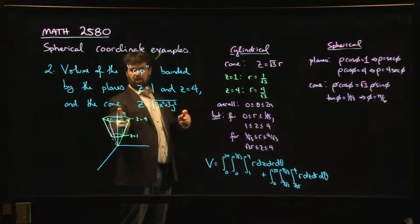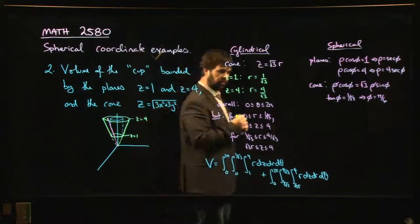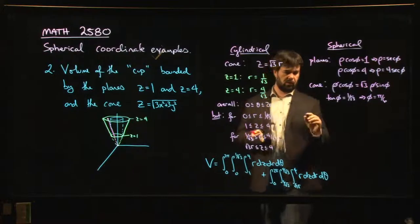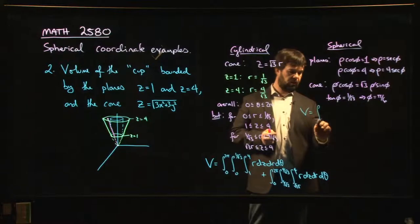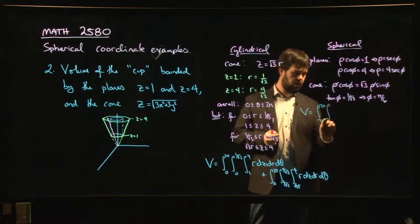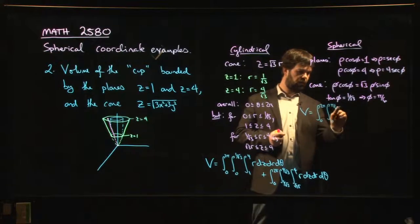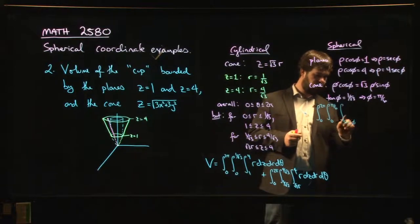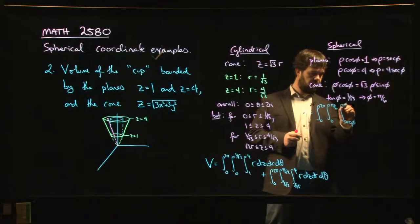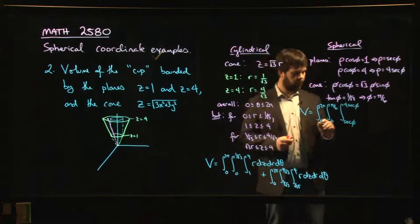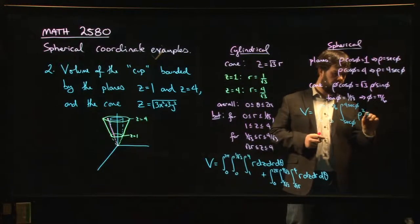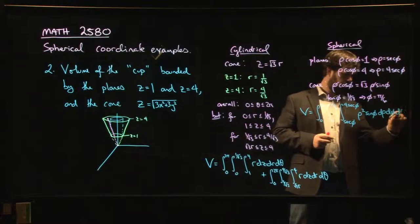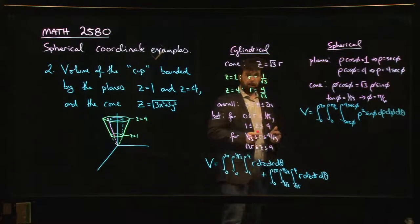Now we know that phi should start at zero, should go to pi over six. That makes sense. Theta still goes from zero to two pi. So now we're set up to write down the integral in spherical coordinates. In spherical coordinates, the volume looks like the integral from zero to two pi, zero to pi over six. And then the only part that's a little bit kind of not so nice, we go from secant phi to four secant phi. And then we have our rho squared sine phi, d rho, d phi, d theta. And now we have it set up in spherical coordinates.